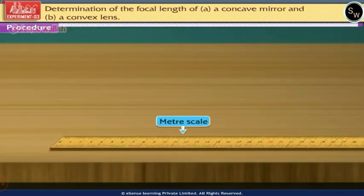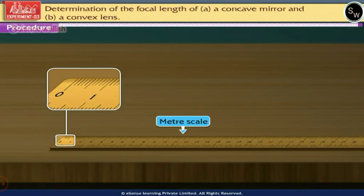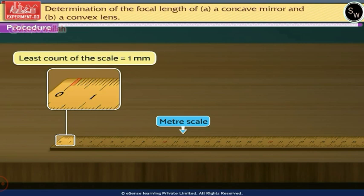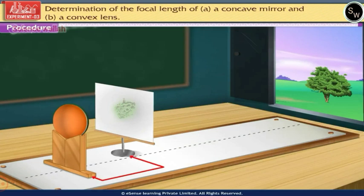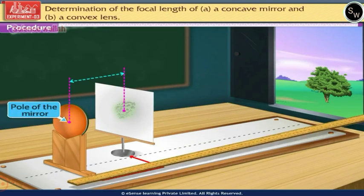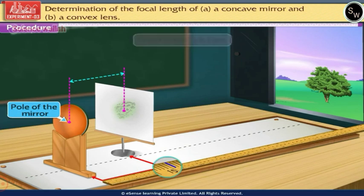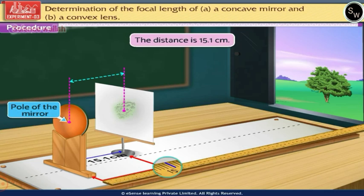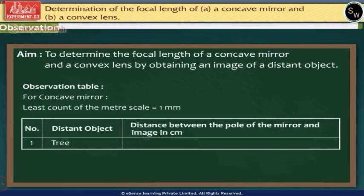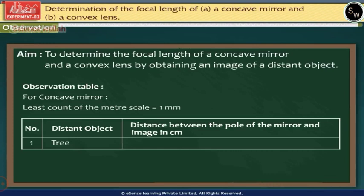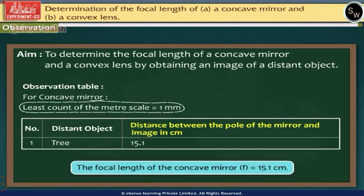Now, take the meter scale and note its least count. The least count of the scale is one millimeter. Measure the distance between the pole of the mirror and the image on the screen with the help of the meter scale. The distance is 15.1 centimeter. Let us enter the value in the observation table. This distance is nothing but the focal length of the concave mirror.